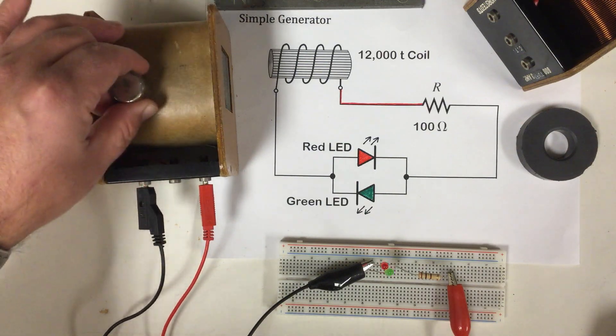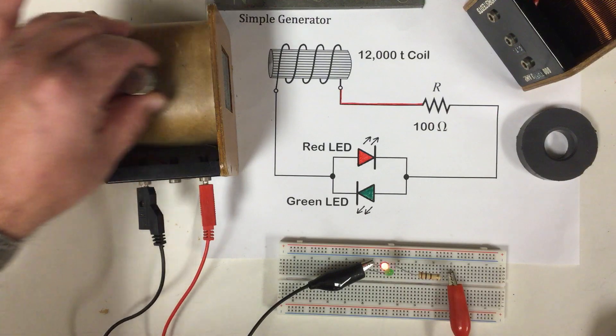Pressure on electrons, or electron pressure, is voltage by definition.